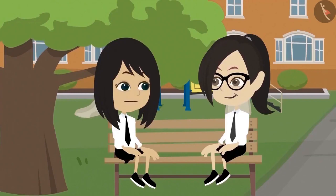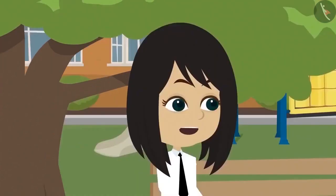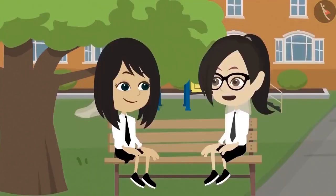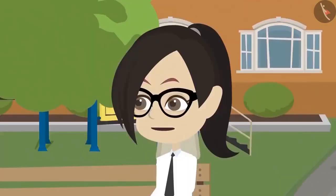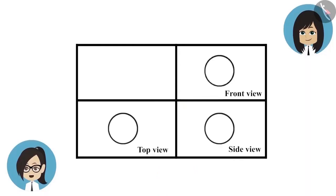Vandana, yesterday I was drawing the top view, side view and the front view of different objects. I found some objects whose shape you will not be able to guess easily. This will be a lot of fun. See this. These are all in the shape of a circle. How did this happen? Is this really the drawing of an object? Yes, and it can be easily found. All three views of any object should be different. I have another drawing in which all three views of one object are the same.